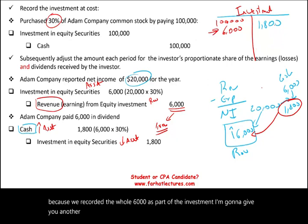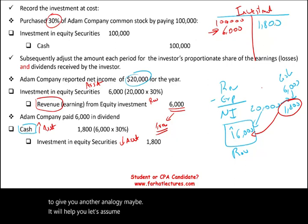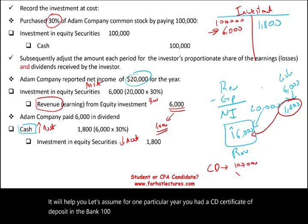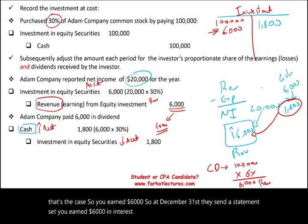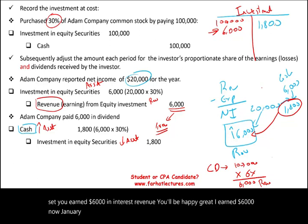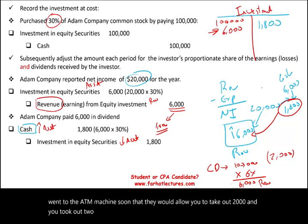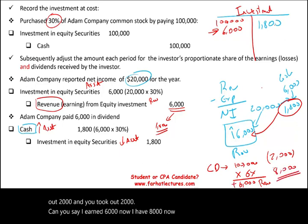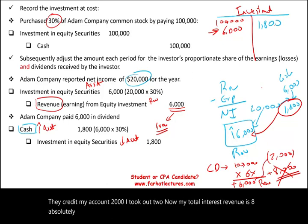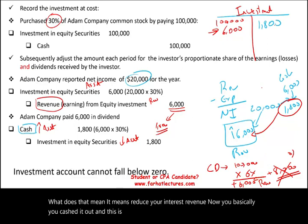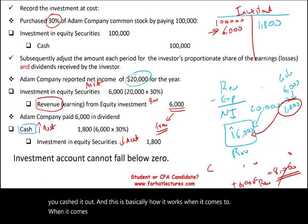Here's an analogy. Assume you had a $100,000 certificate of deposit in the bank and you earned 6%, so $6,000 in interest revenue. On December 31st, the bank sends you a statement saying you earned $6,000. Then on January 2nd, you went to the ATM and took out $2,000. You cannot say your total interest revenue is $8,000 — what you did is take $2,000 out of the $6,000 you earned, effectively cashing it out. That's how dividend works for equity method investments.